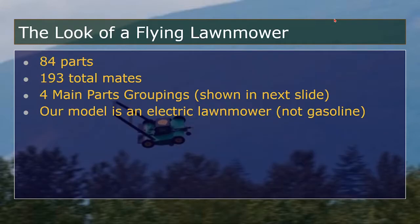Our flying lawnmower has 84 parts in total and 193 total mates. This includes normal mates, advanced mates, and also mechanical mates. We grouped our parts into four main groupings, which will be shown in the next slide.